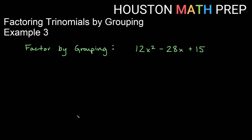Welcome back everyone to our third example video for factoring trinomials by grouping. We've got 12x squared minus 28x plus 15. I'm using a little bit larger number here so I can do an example with bigger numbers when we're dealing with the a, b, and c part. So we'll go through and label our coefficients a, b, and c, and look at a times c compared to b as we've done in our other examples.